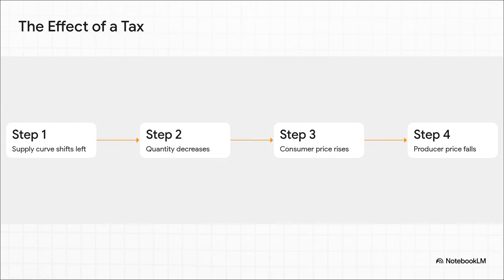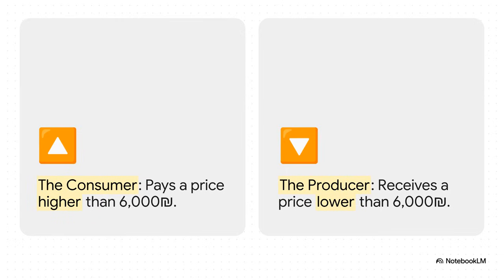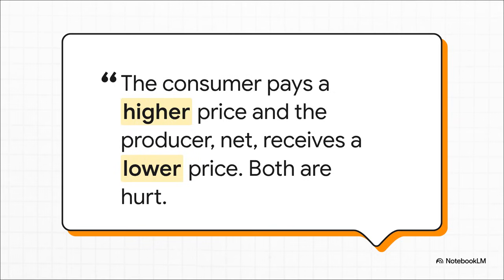What's the result of all that? Fewer air conditioners get sold, consumers end up paying more, and the producers ultimately get to keep less money. And this part is so important: the burden of that tax is almost always shared. The price for the consumer doesn't just jump up by the full 1,000 shekels. Instead, the new price lands somewhere in the middle — the consumer pays a little more than before, and the producer gets to pocket a little less. Both sides end up absorbing part of that cost. What a tax does is drive a wedge right between the price the buyer pays and the price the seller actually receives. The whole market shrinks, and as the lecturer puts it, both the consumer and the producer are hurt by this.